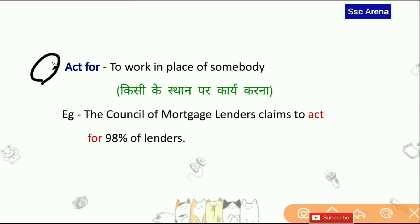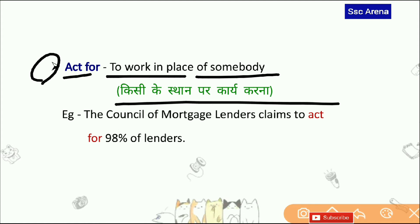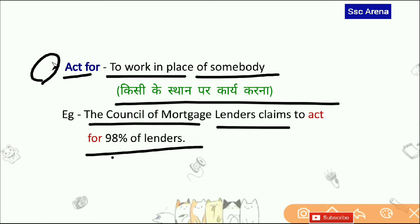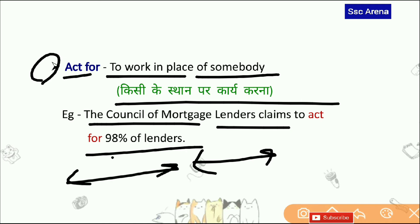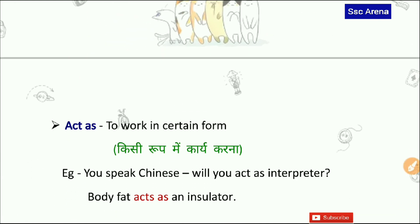अगला हमारा बहुत important है — Act For. Act For का मतलब होता है to work in place of somebody — किसी की जगह पर कोई कार्य करना। जैसे — The council of mortgage lenders claims to act for 98% of lenders। Simple language में — जैसे driver काम पर नहीं जाता तो उसकी जगह अपने भाई या दोस्त को भेज देता है — उसे कहते हैं Act For। जितना easy में याद करेंगे उतना लंबे समय तक याद रहेगा।